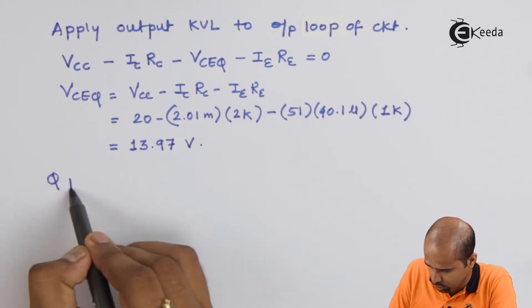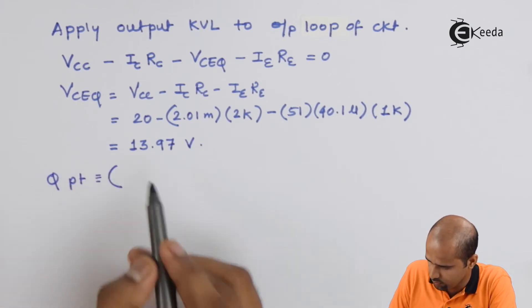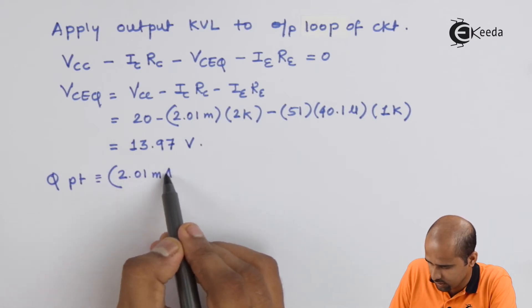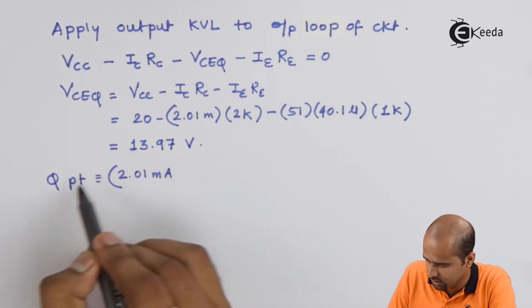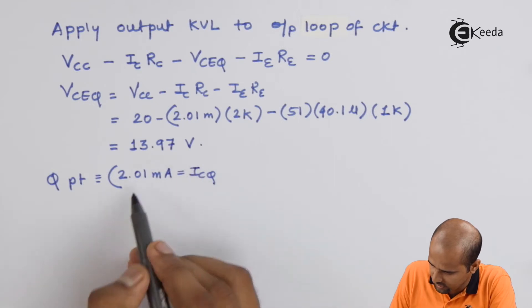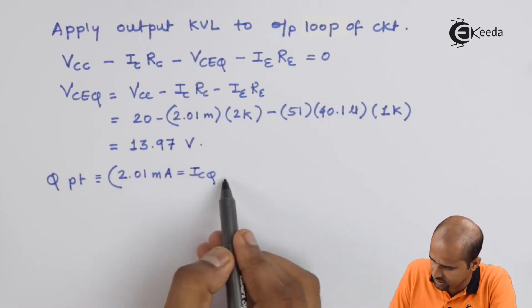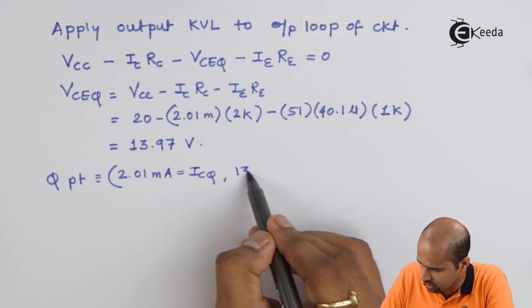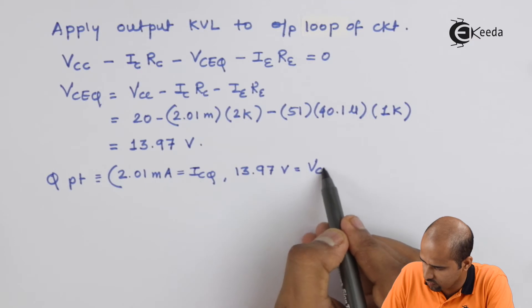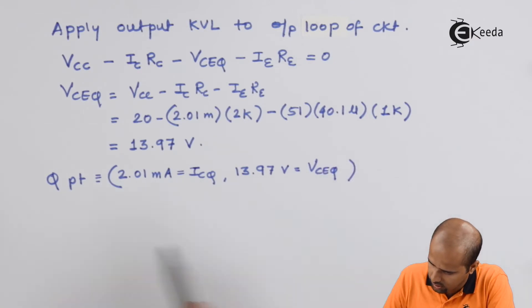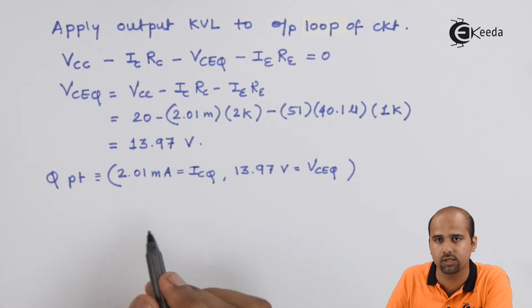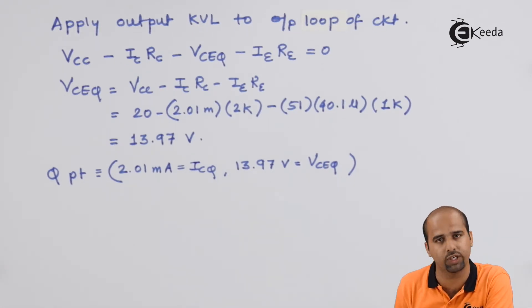Now we can decide that Q point is equal to 2.01 milliampere. That is IC. And second part is VCEQ that is 13.97 volts that is equal to VCEQ. And now we will plot it on your output characteristics.